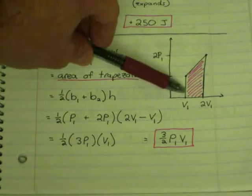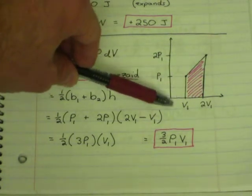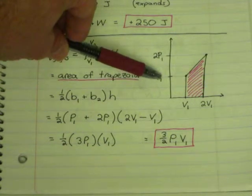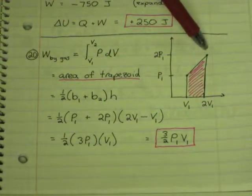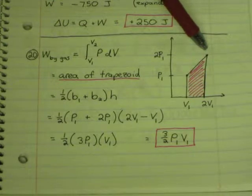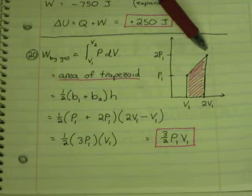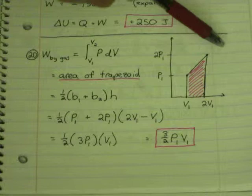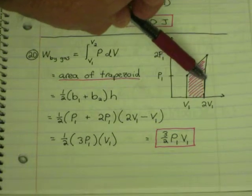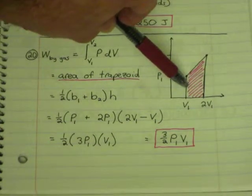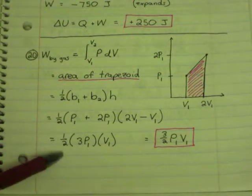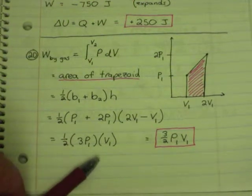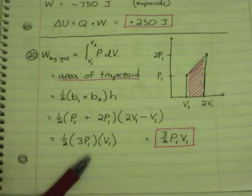Area of the trapezoid is one-half the sum of the bases times the height. So here's the first base, b1, the second base, b2, and the height is from V1 to V2, so it's a sideways trapezoid. So one-half, the first base is this height, P1. The second base is 2 times P1. The height of the trapezoid from here to here is 2V1 minus V1. So when we clean this up, we get one-half 3P1 times V1 as the work done by the gas.